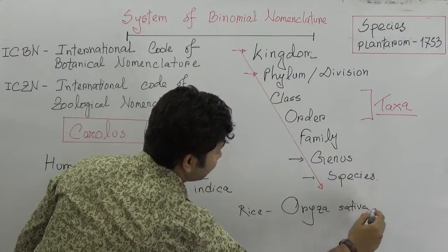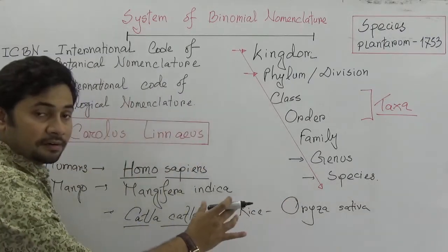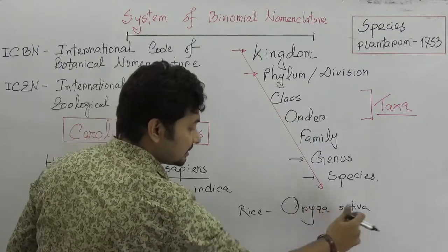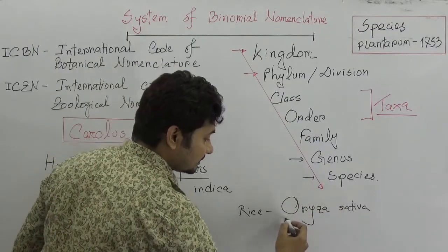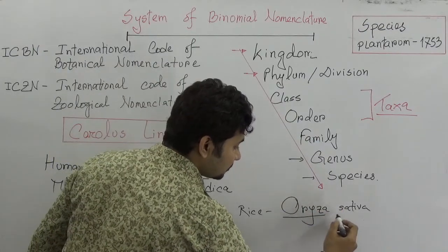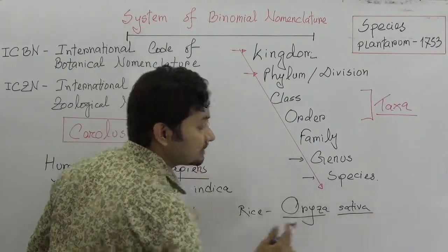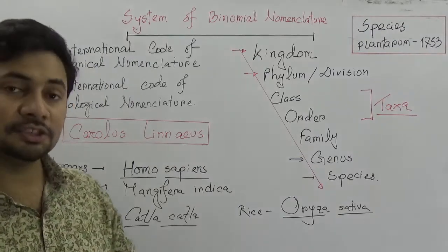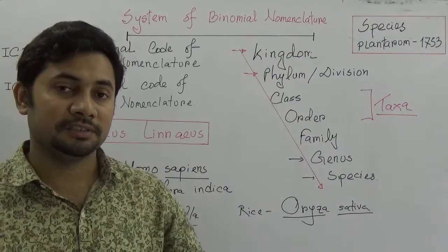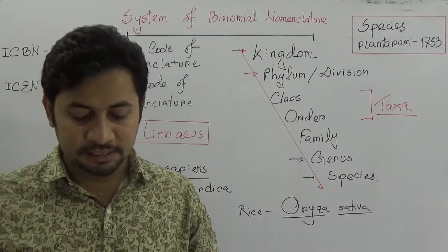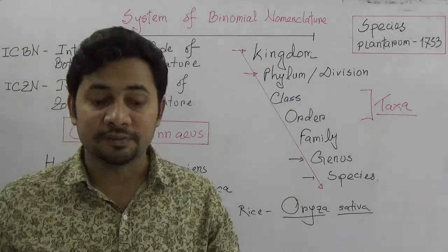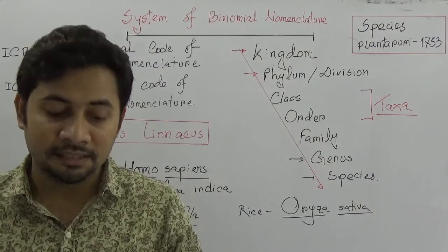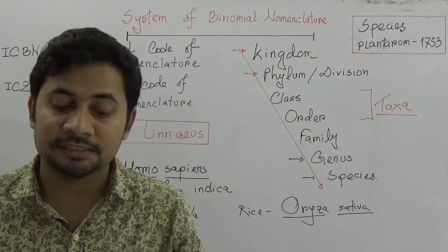For example, in case of rice we say Oryza sativa — this is the genus and this is the species. We need to underline separately under these two separate words.